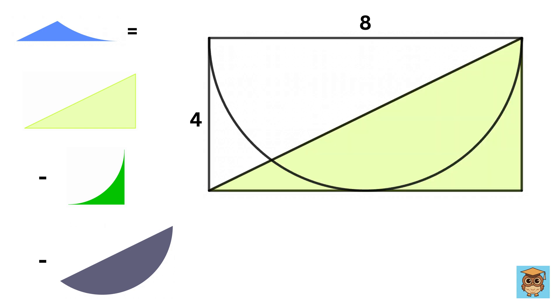Great! The area of this right triangle is relatively easy to solve. Its base is 8 and height is 4, so its area is 8 times 4 by 2, or 16.